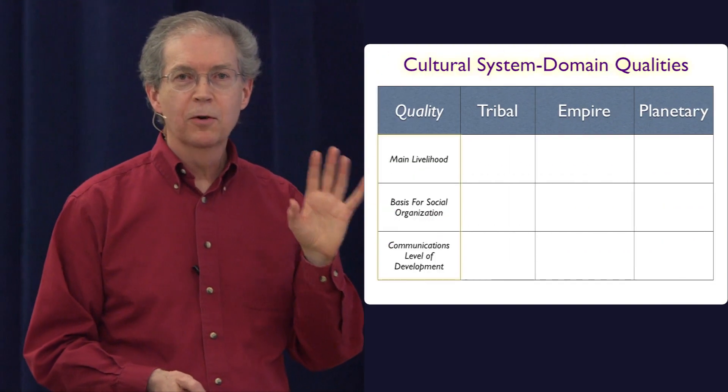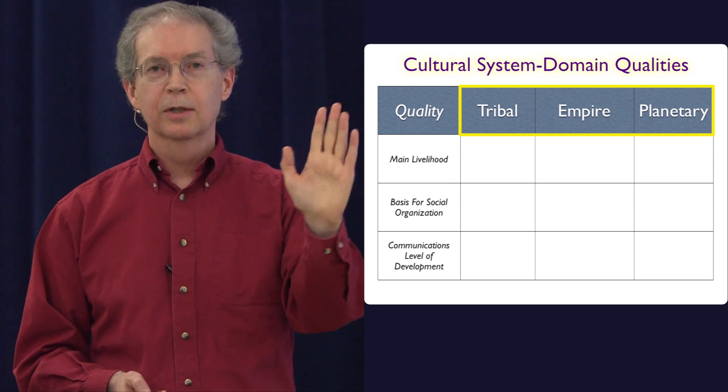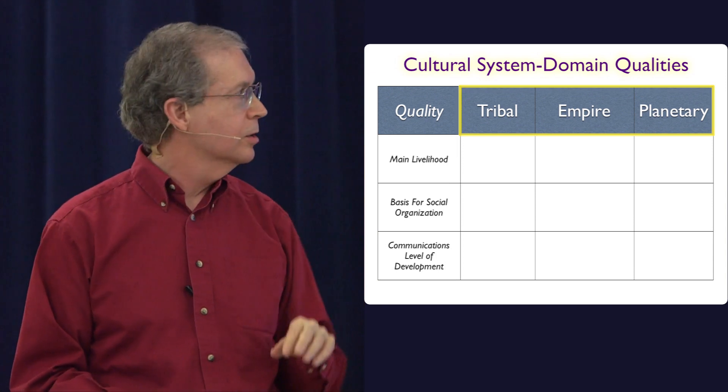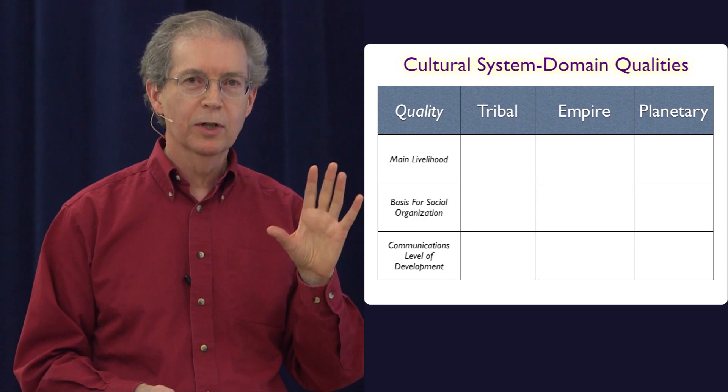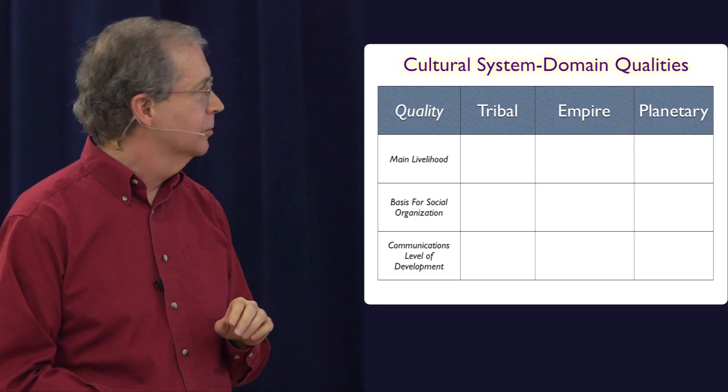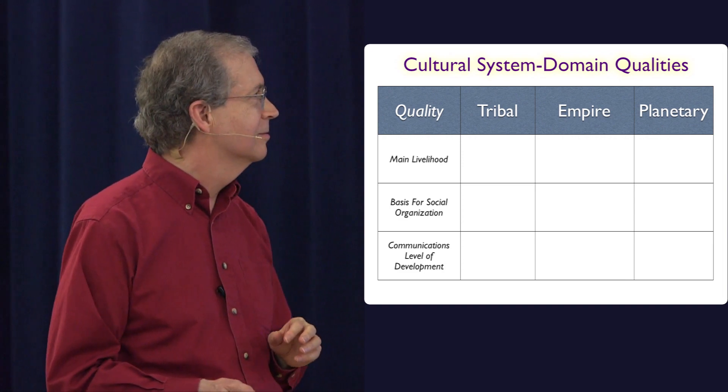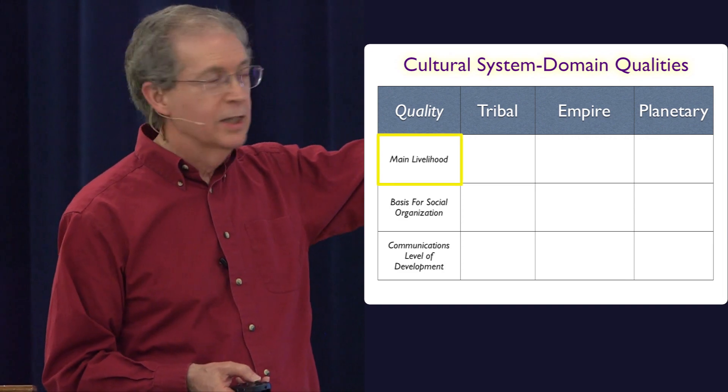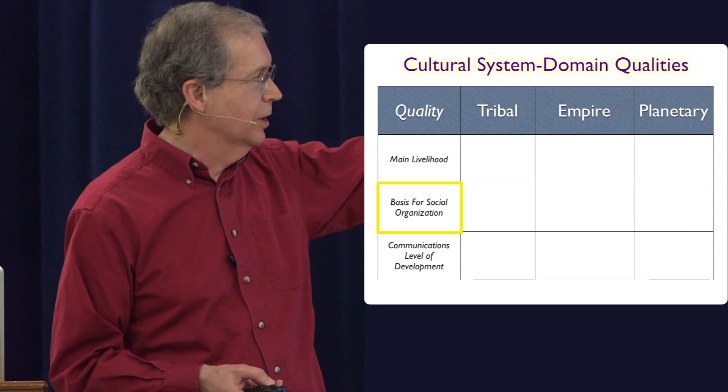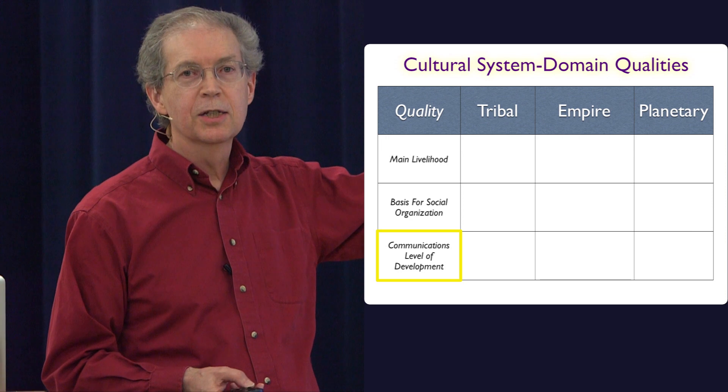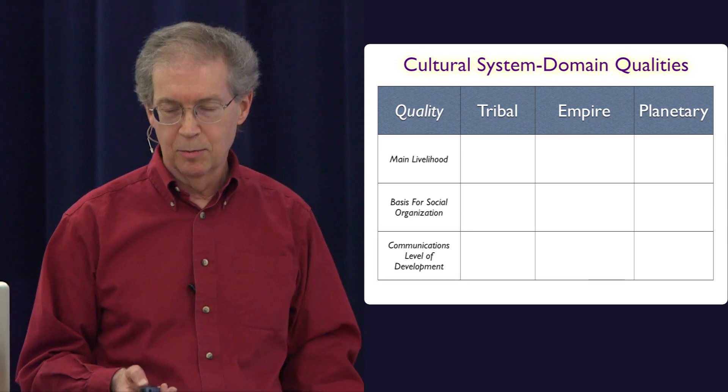So, I want to focus on three particular qualities as we move through the different domains. Now, these are not the only qualities, but they're pretty important qualities. We could have had more, but these will do. So there's main livelihood. What is the main livelihood in the culture? What is the basis for social organization? And what's the communications level of development? That's a little awkward phrase, but I think you'll see as the examples come along.